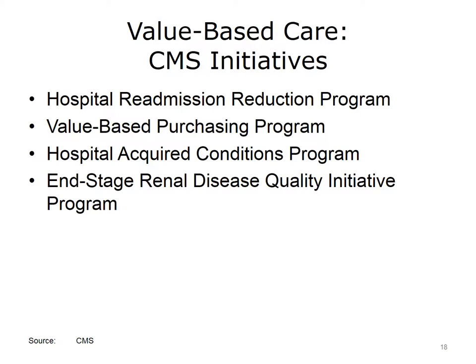The Centers for Medicare and Medicaid Services, or CMS, is the first and the largest health care payer to link outcomes to payment. CMS value-based programs serve to reward health care providers with incentive payments for the quality of care they give to people with Medicare. These programs add to CMS's larger quality strategy to reform how health care is delivered and paid for. CMS has aligned their value-based programs with the goals of the Triple Aim. Currently, there are four programs: the Hospital Readmissions Reduction Program, which reduces payments to hospitals with excess readmissions; Value-Based Purchasing Program, which promotes better clinical outcomes by improving patient experience; Hospital Acquired Conditions Program, which reduces payments for hospitals with excess hospital-acquired conditions; and End-Stage Renal Disease Quality Initiative Program, which reduces payment to end-stage renal disease facilities that don't meet established performance standards.